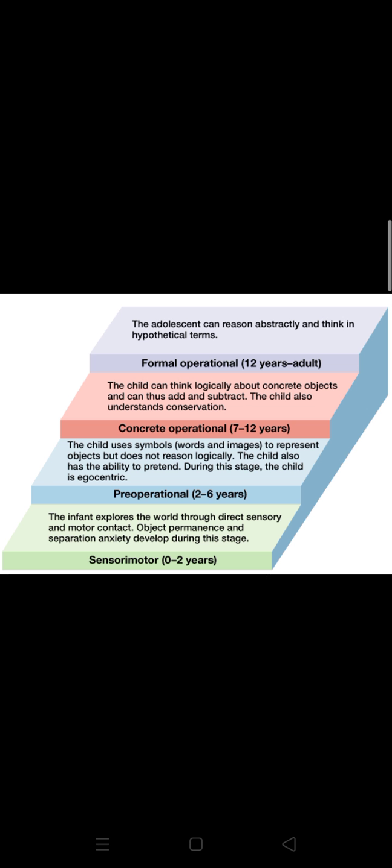So what does the child do in the sensory motor stage? The child cannot recognize the world, cannot think, and cannot talk to anyone. Allah has given him a sense — now we have five senses. The child communicates and interacts with the world through these senses.